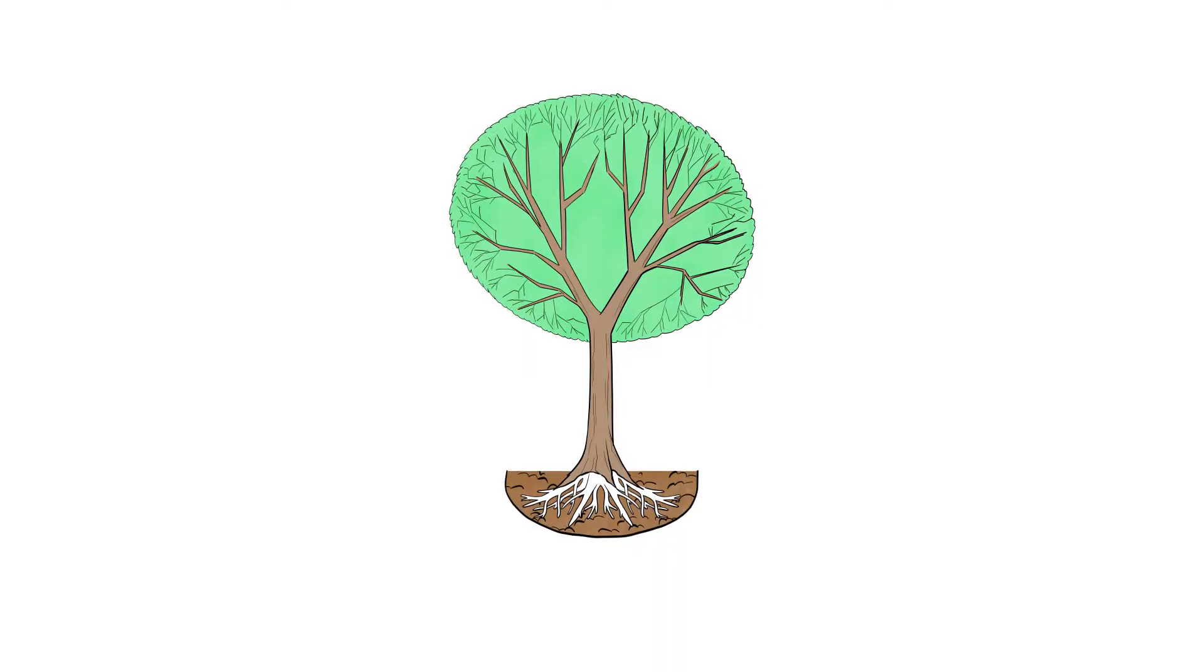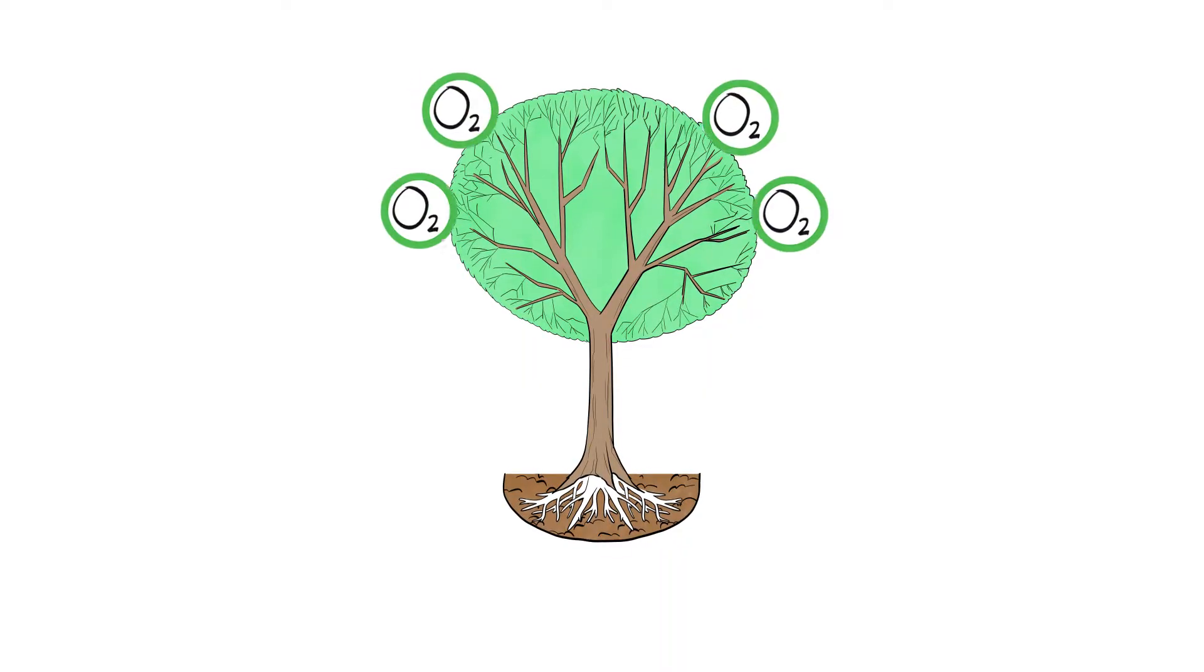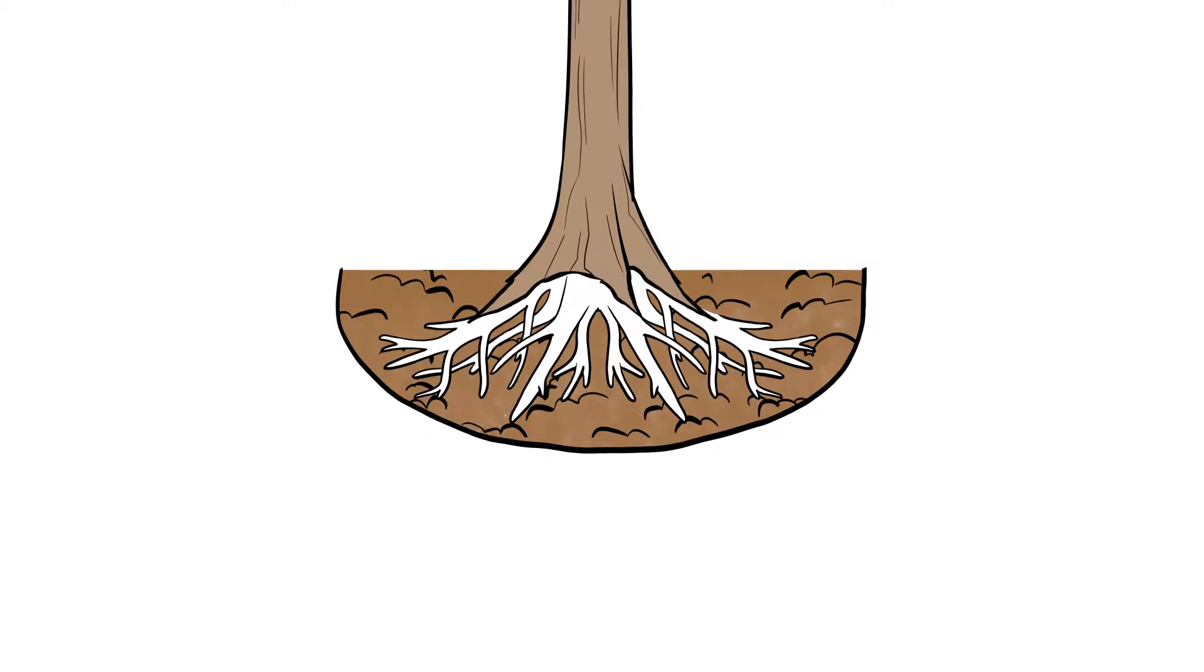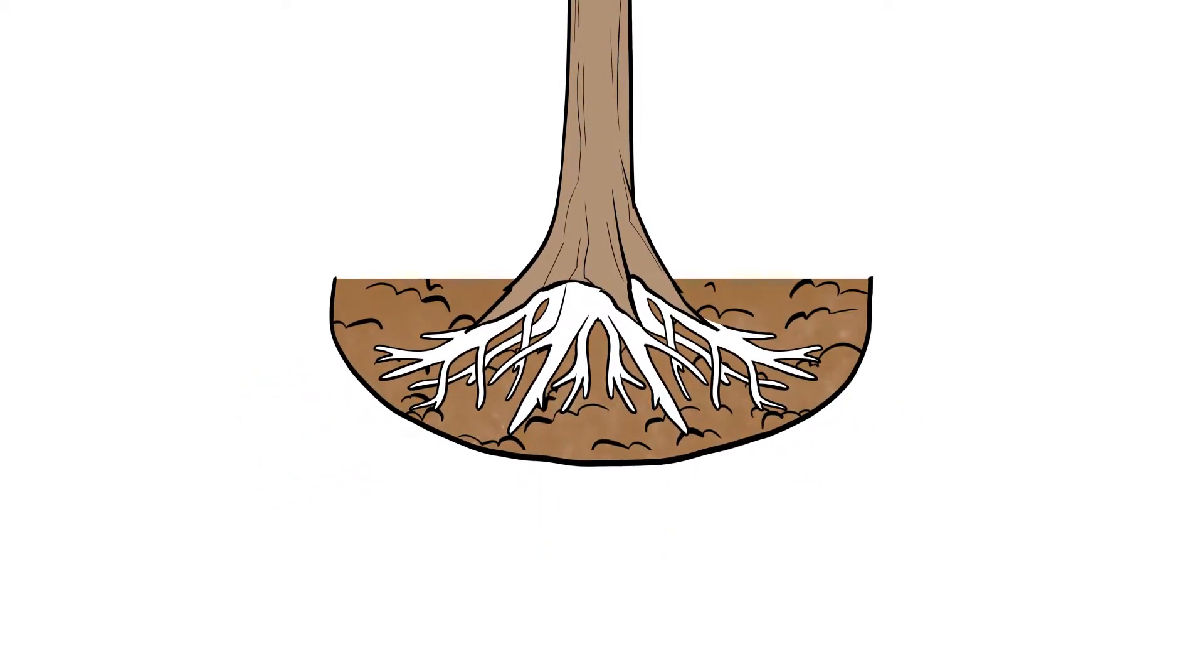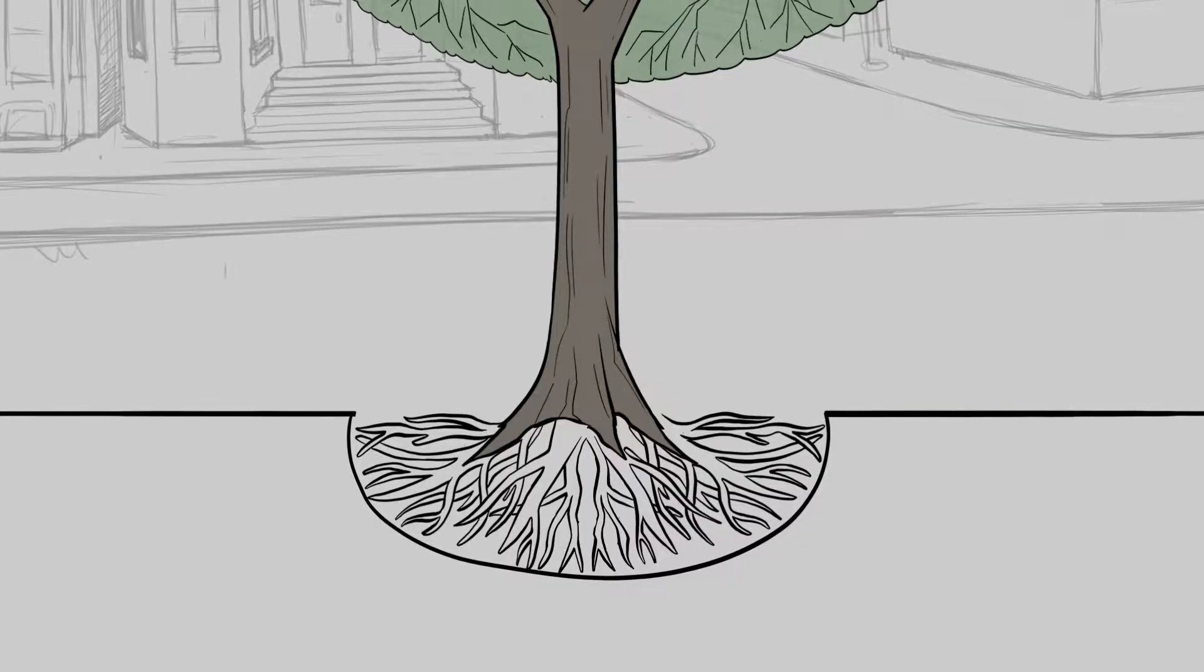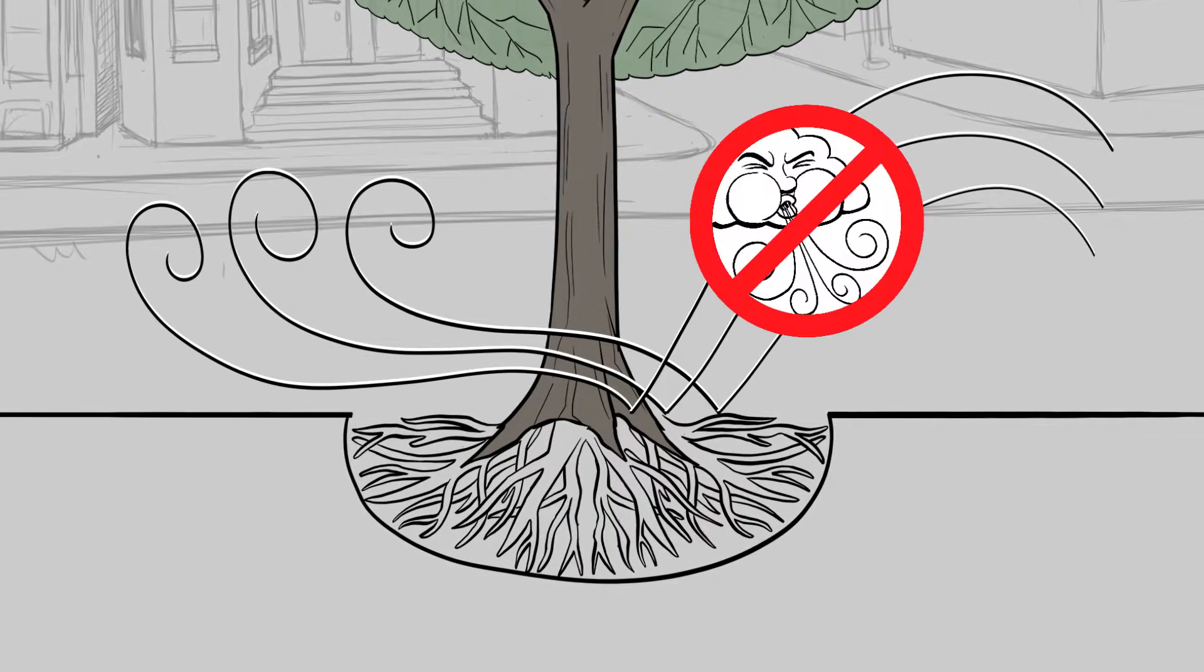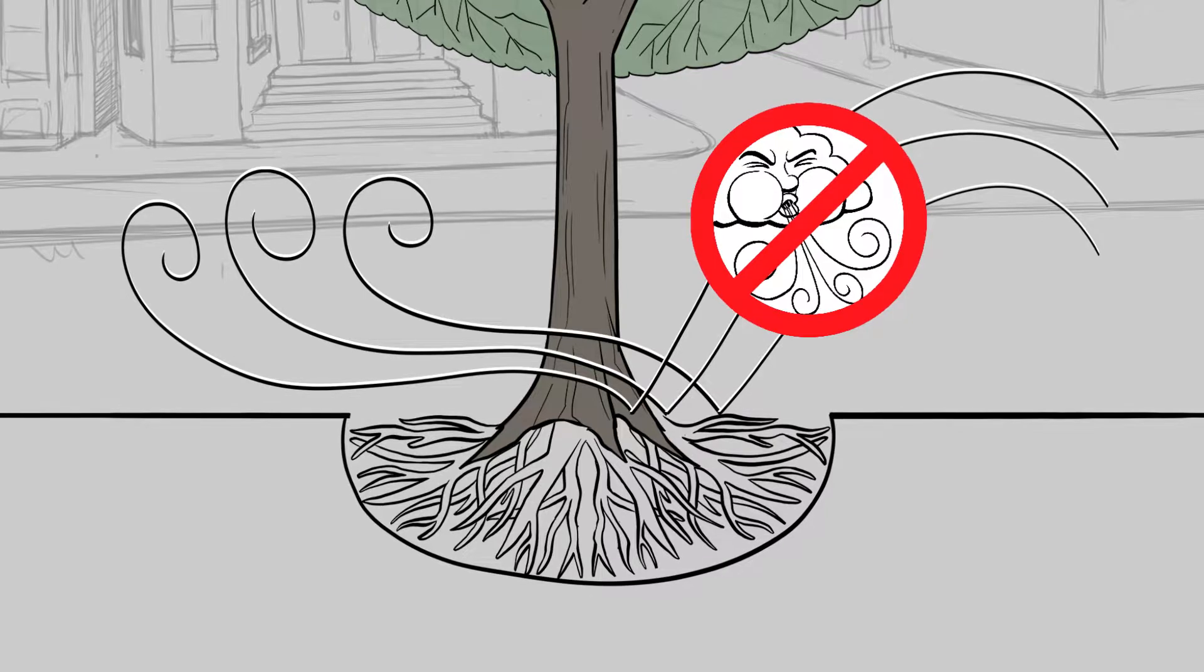We now know that a tree cannot translocate oxygen from its leaves to its roots. Root systems can only obtain the oxygen they need from the immediate surroundings, the soil. Subsoils are an unfriendly environment where oxygen cannot easily penetrate and be available for the roots to uptake.